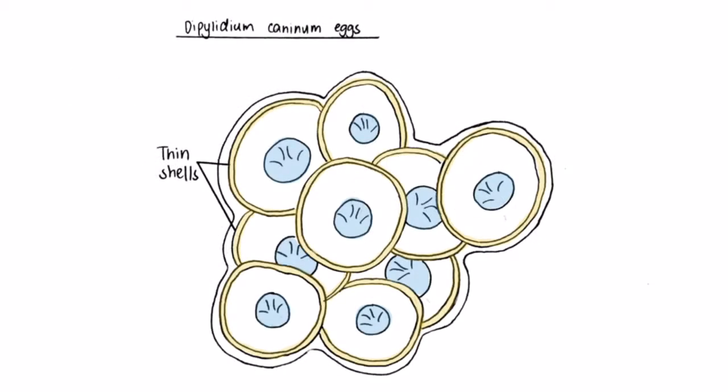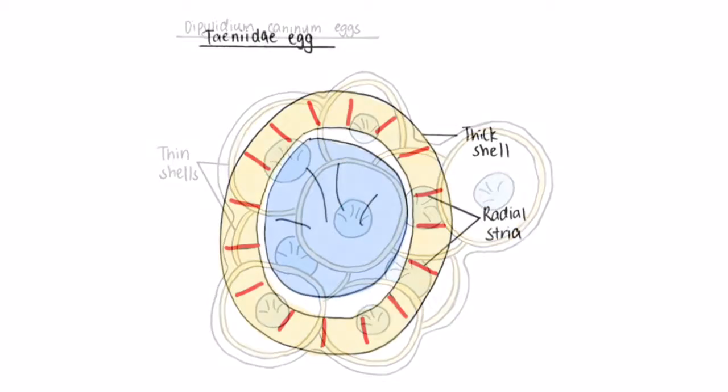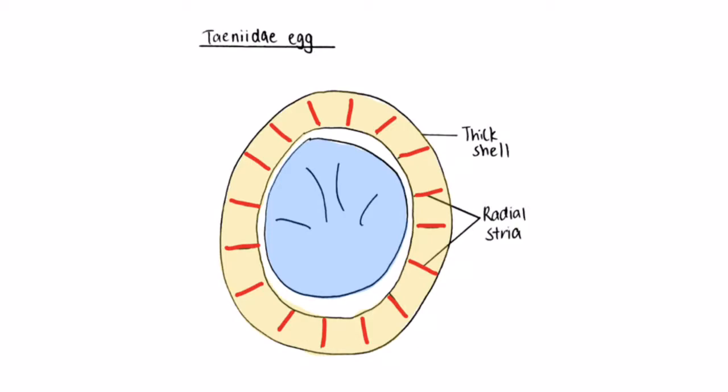The eggs of Dipylidium caninum are small and spherical with thin sidewalls and are usually clustered together in groups of 20. On the other hand, the eggs of Taeniidae are spherical with thick sidewalls that contain radial stria.